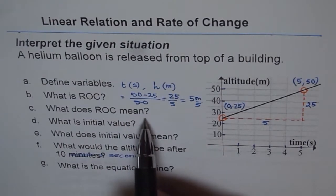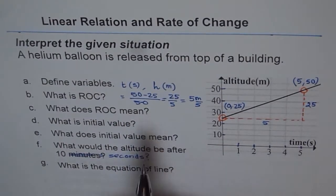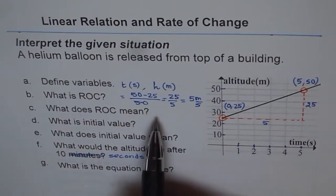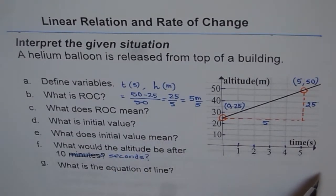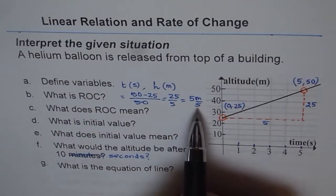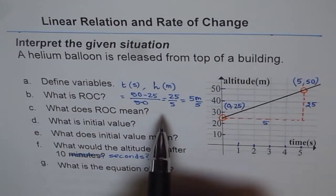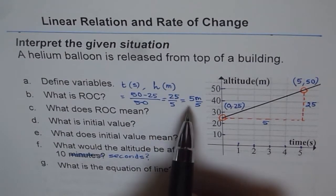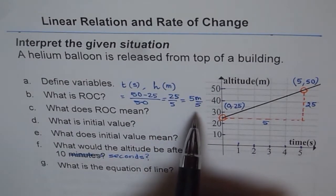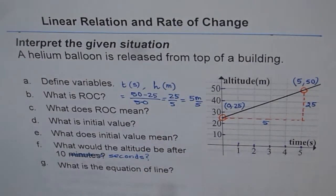Rate of change means the speed with which the height of the balloon is increasing with time. The rate of change is 5 meters per second, meaning the height of the balloon is increasing by 5 meters every second. This is what you need to write for the question: what does the rate of change mean here?